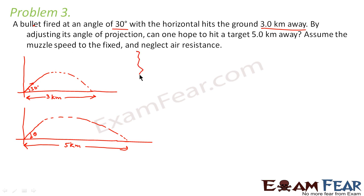So in this case, let us first consider the first scenario which is given. Here we are given that theta is equal to 30 degree and also the total horizontal range is equal to 3 kilometers. Now we know that horizontal range R is equal to u squared sine 2 theta divided by g.